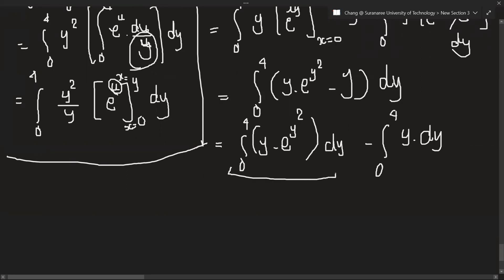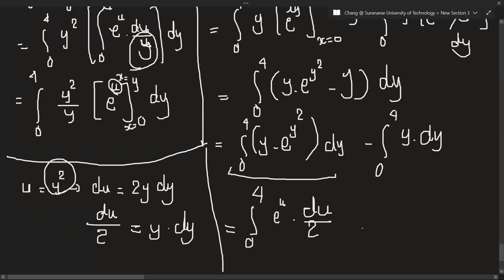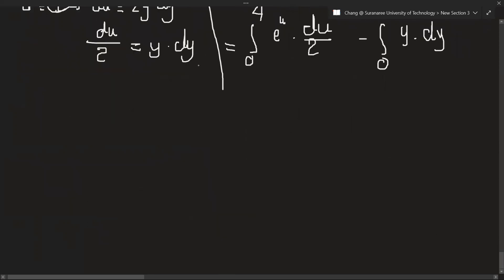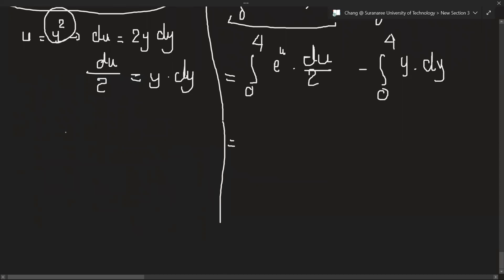So for the first one, we can use change of variables by putting u as y squared. So u equals y squared. So du—we want to divide—is 2y dy. When we differentiate y squared, we get 2y. So du over 2 equals y dy. Let's find the value of u here.